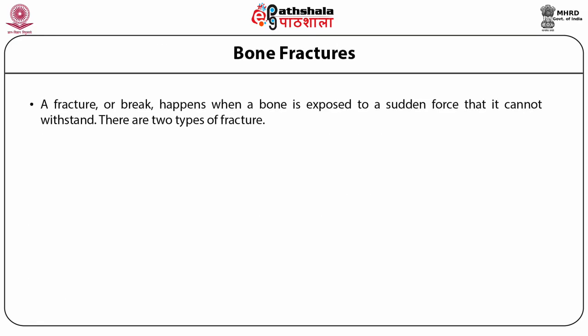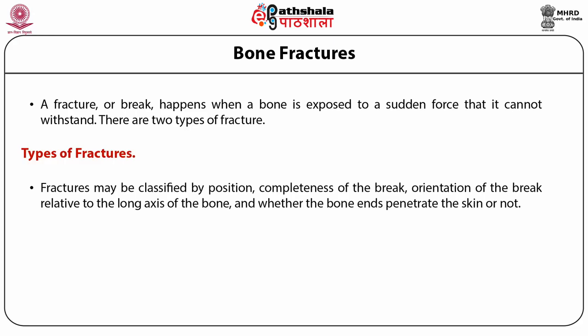Bone fractures: a fracture or break happens when a bone is exposed to a sudden force that it cannot withstand. There are two types of fracture. In a simple or closed fracture, the broken bone ends remain below the skin. Whereas in a compound or open fracture, they stick out through the skin and often cause damage to surrounding tissue. Fractures may be classified by position, completeness of the break, orientation of the break relative to the long axis of the bone, and whether the bone ends penetrate the skin or not. Types include comminuted, compression, spiral, epiphyseal, depressed, and greenstick fractures.